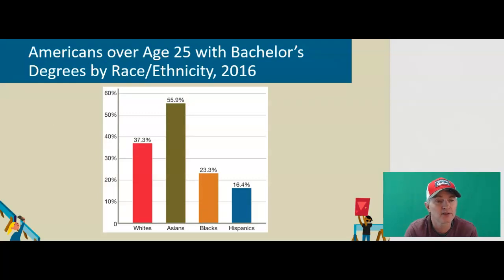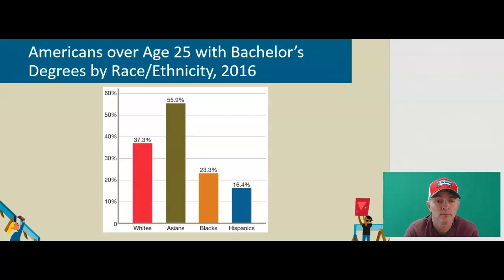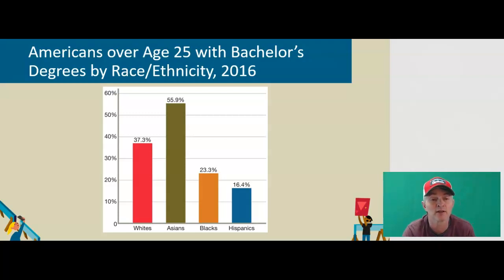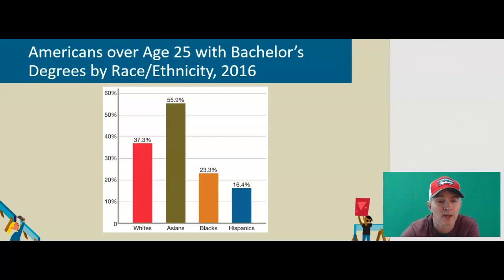We also see differences in how this plays out in reference to college education. Asians are far more likely to have a bachelor's degree by the age of 25, outpacing white Americans by about 20 percentage points. White Americans come in second, African Americans in third, and Hispanics at 16.4%.